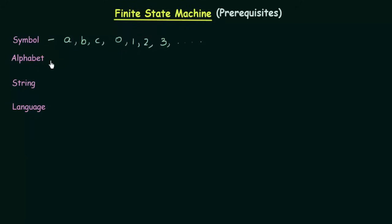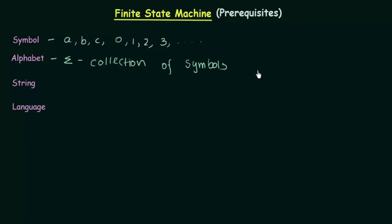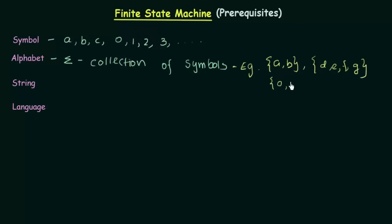Now let's come to the second one: Alphabet. An alphabet is denoted by Sigma and is a collection of Symbols. For example, {A, B} is a collection of two symbols, or {D, E, F, G} — a collection of four symbols — could also be an Alphabet. Or we could have numbers like {0, 1, 2} and so on. A collection of Symbols denoted by Sigma is known as Alphabet.